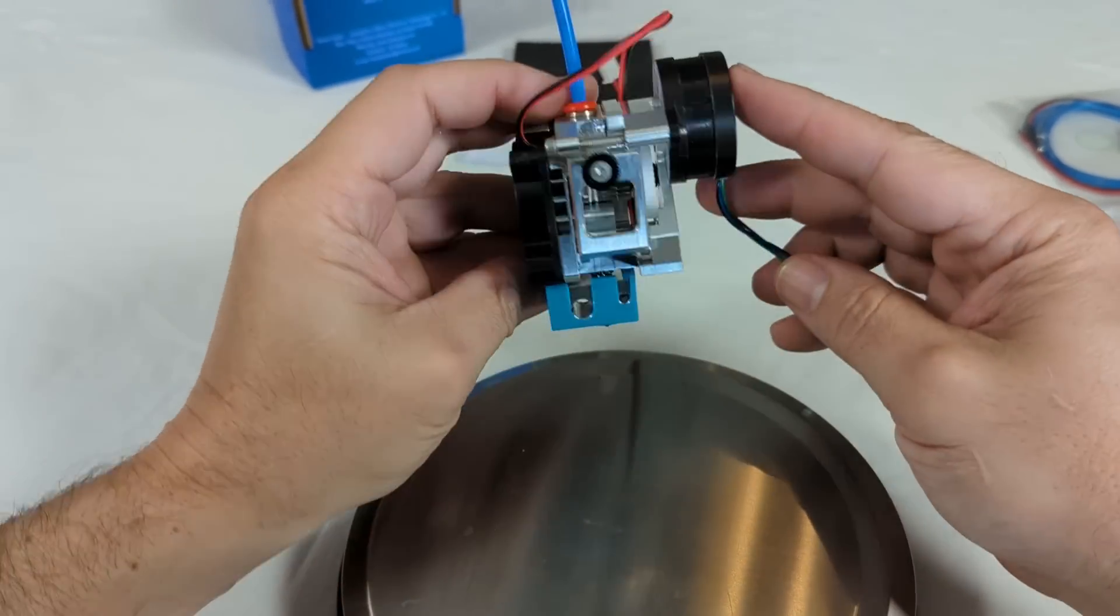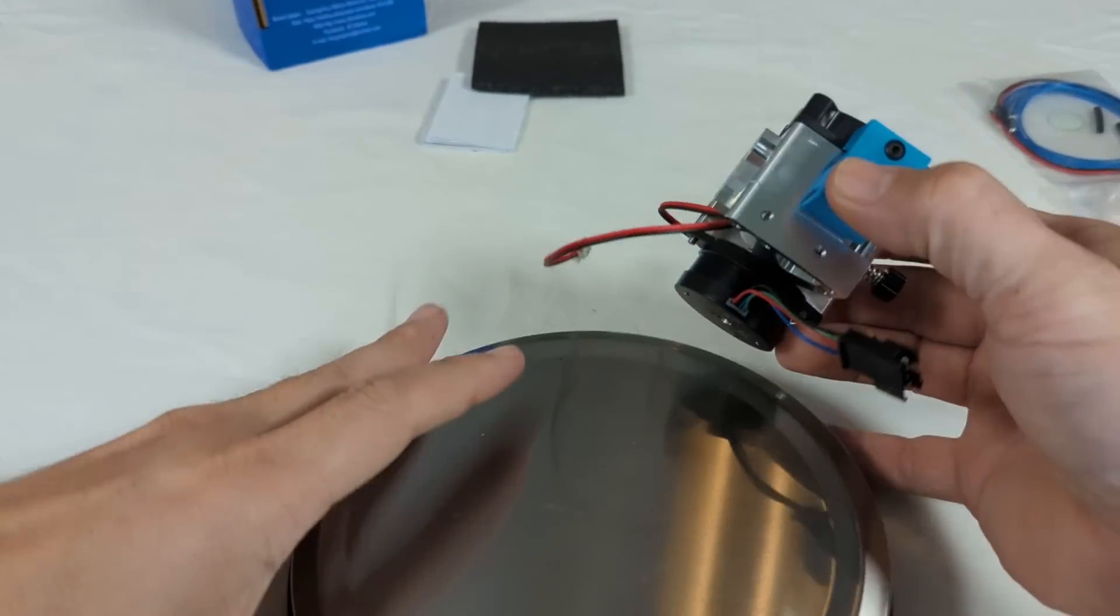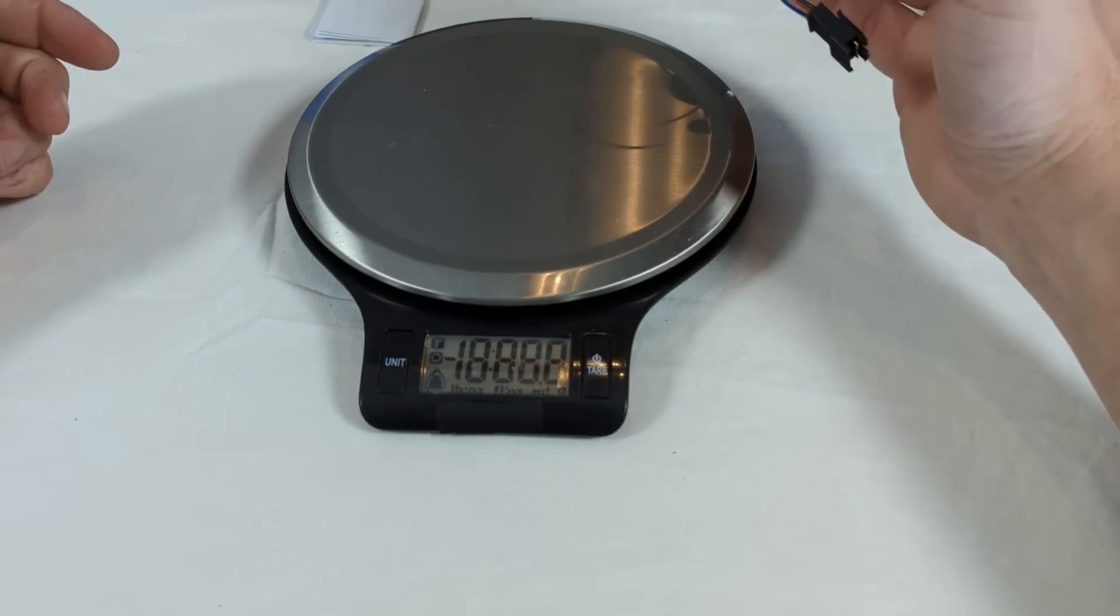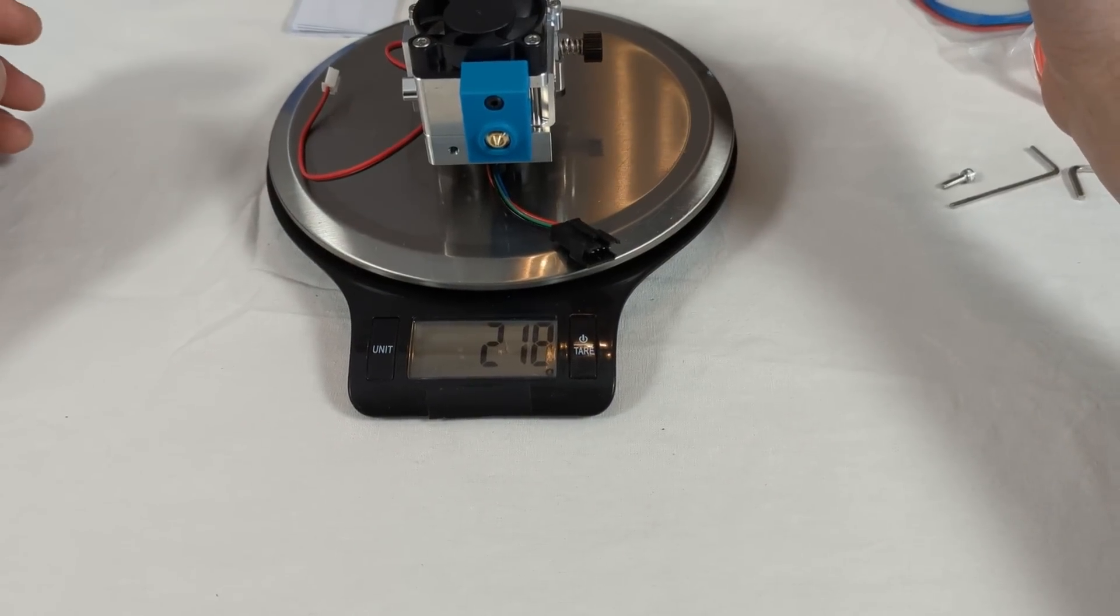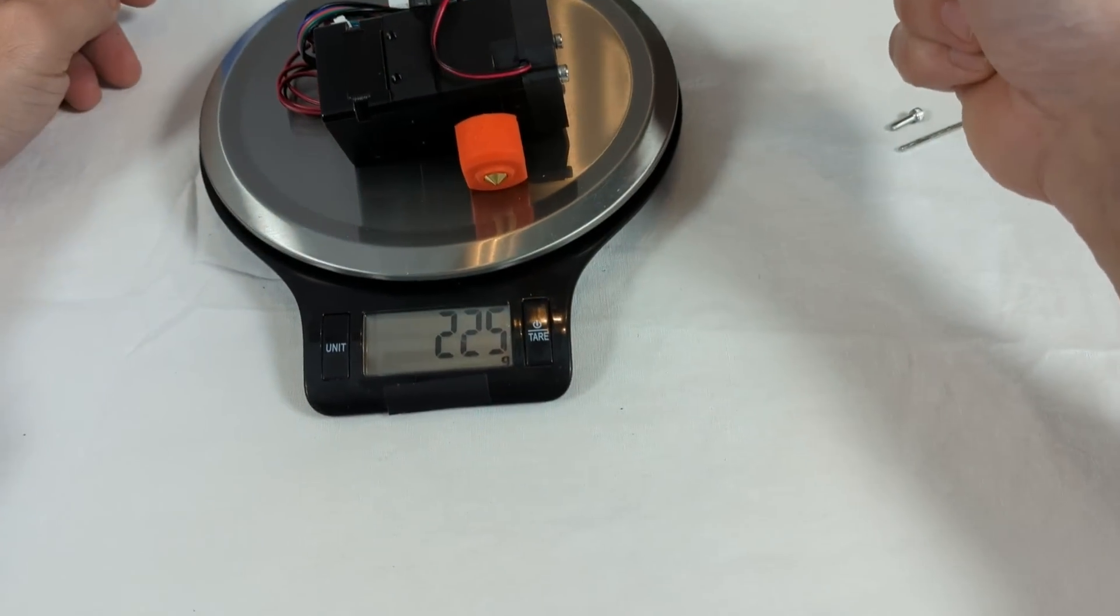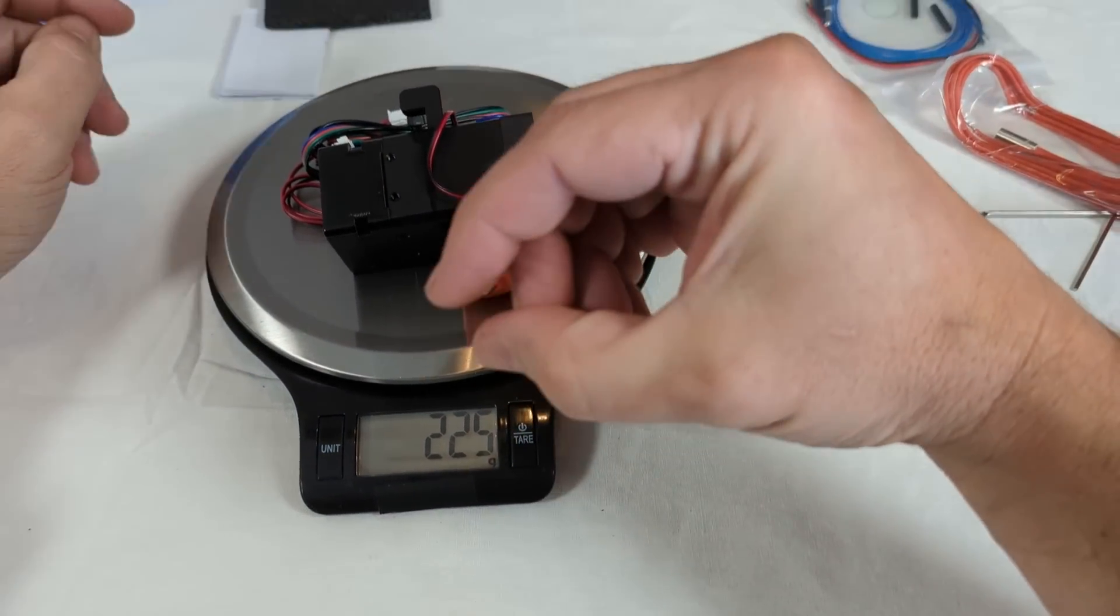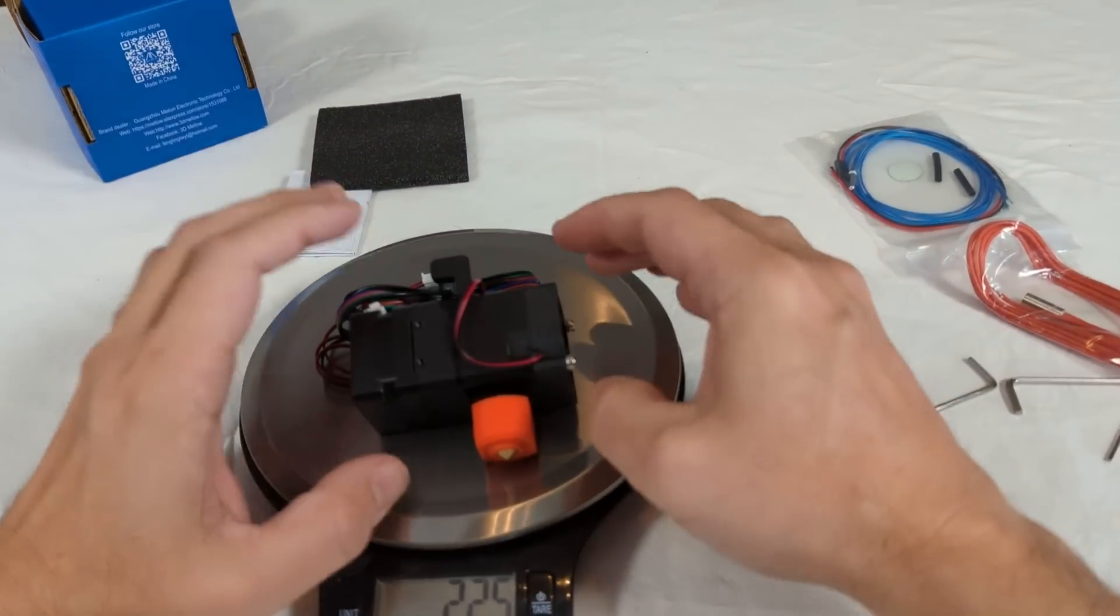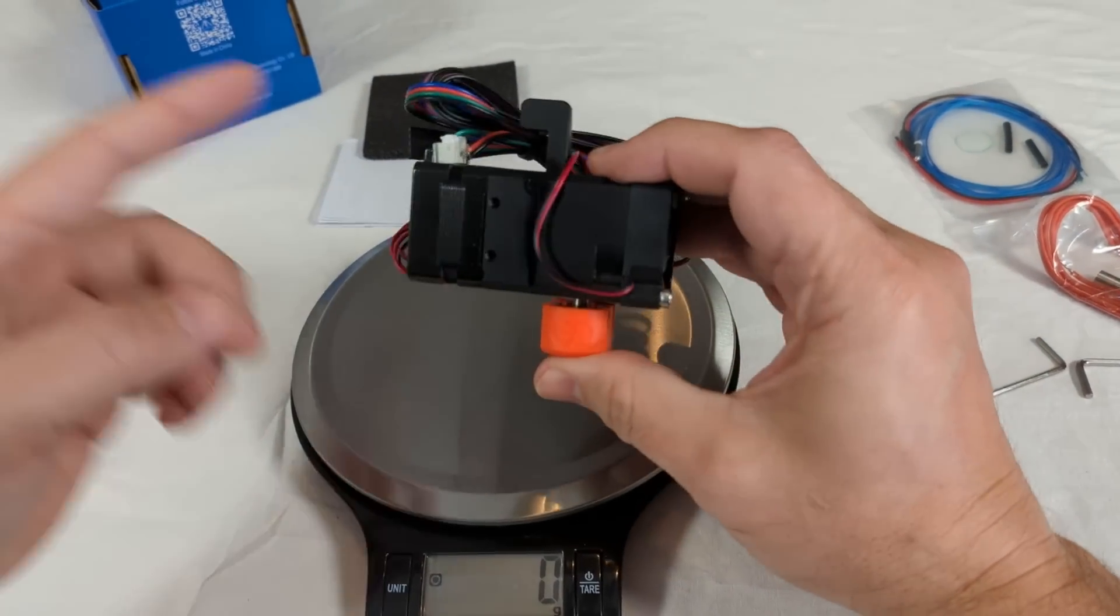That's what the final assembly looks like and let's throw it on the scale here and see how much it weighs. We got 218 grams. That is kind of chunky. The BQ-H2 extruder here, 225. Just slightly heavier.